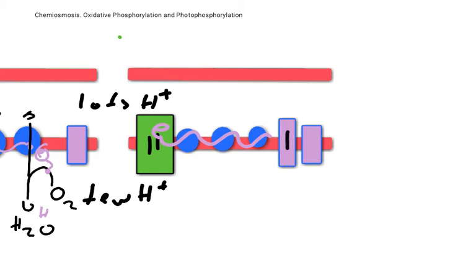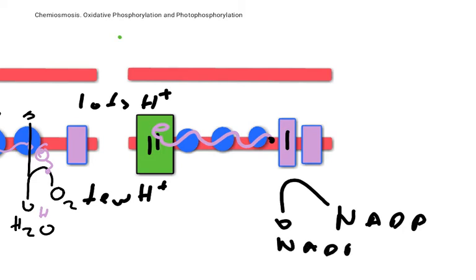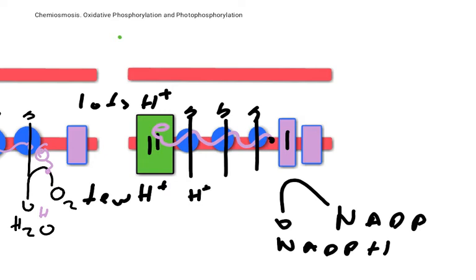Photosystem 1 is then taking the electron off that, and that electron ends up on NADP, becoming reduced to form NADPH. As the electron has traveled down the electron transport chain, the energy has been used to push protons from the stroma into the thylakoid interior — from where there are few to where there are lots — and this generates an electrochemical gradient.